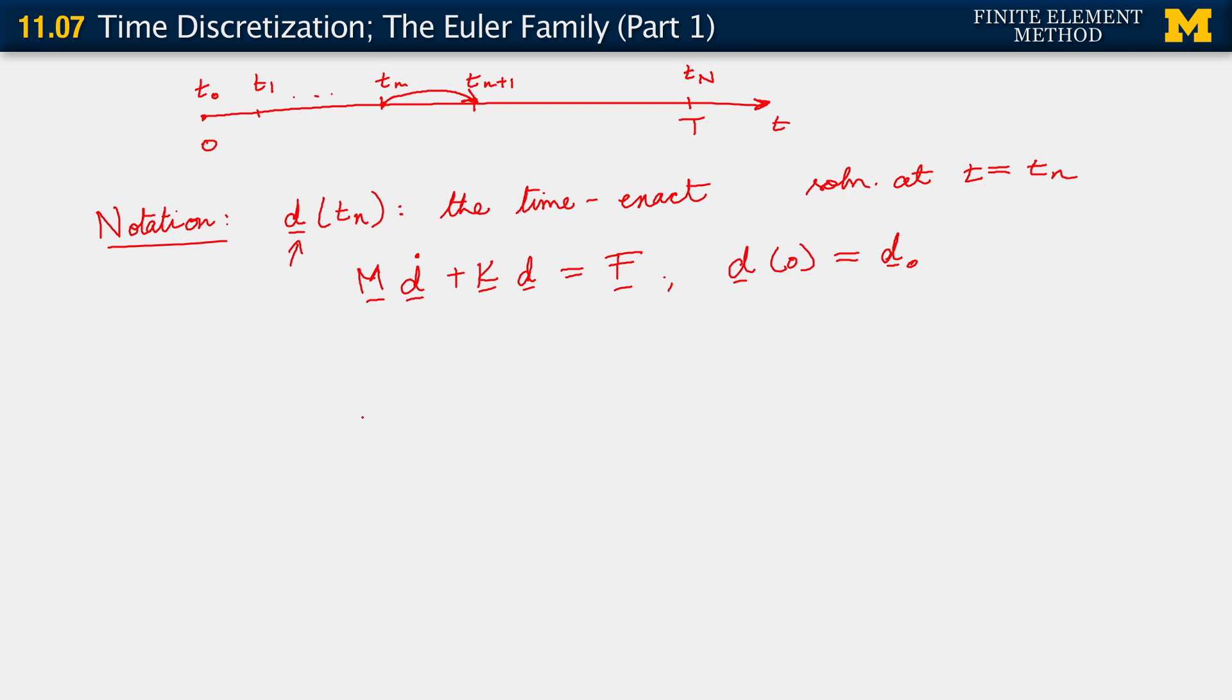In contrast, I will use d sub n to denote the algorithmic solution at tn. So this is the algorithmic solution. By which we mean, the solution that's obtained by applying some sort of discretized time integration algorithm based upon the discretization that we've just spoken of.